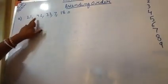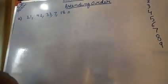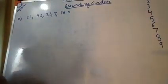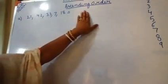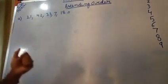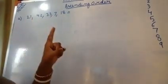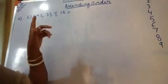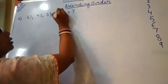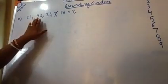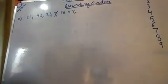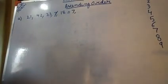See here: 21, 42, 33, 7, 18. I have to arrange these in ascending order, which means smaller number to bigger number. All are two-digit numbers, but only seven is a one-digit number. So children, seven is the smallest one. Now, how will you understand whether 21 is bigger, 42 is smaller, 33 is smaller, or 18 is small? You could count, but counting takes time. This is the clear concept — you will go for tens and ones.